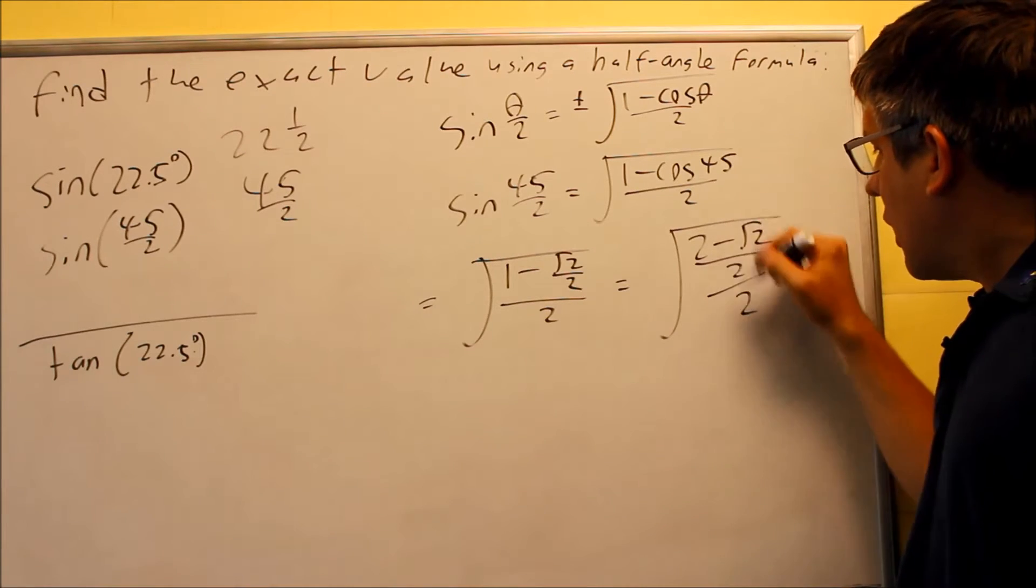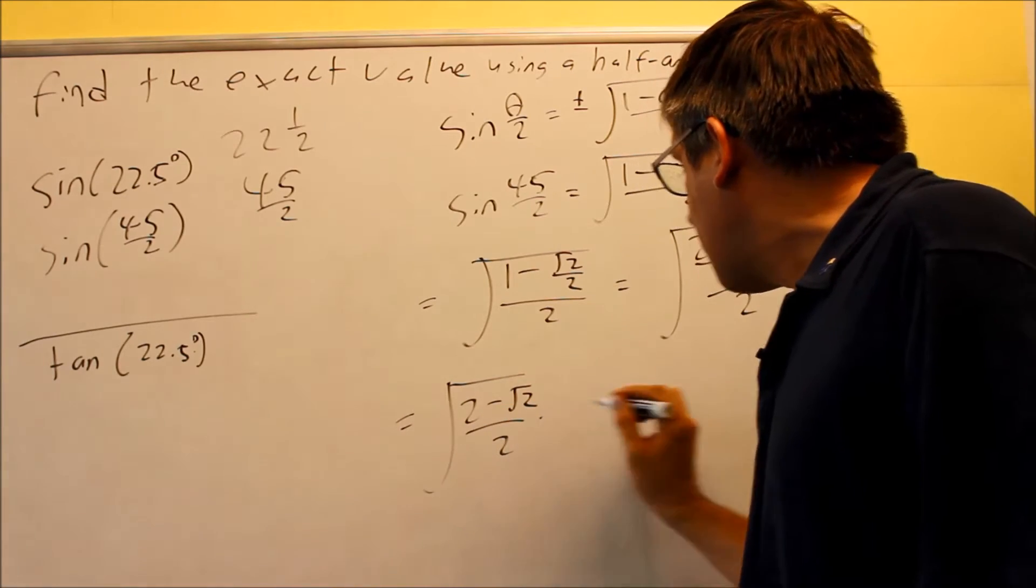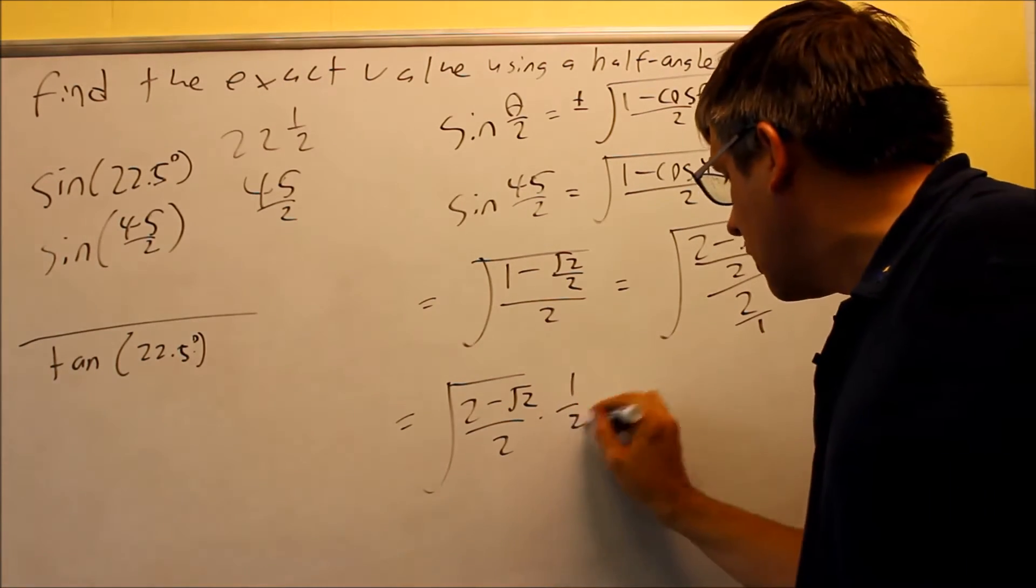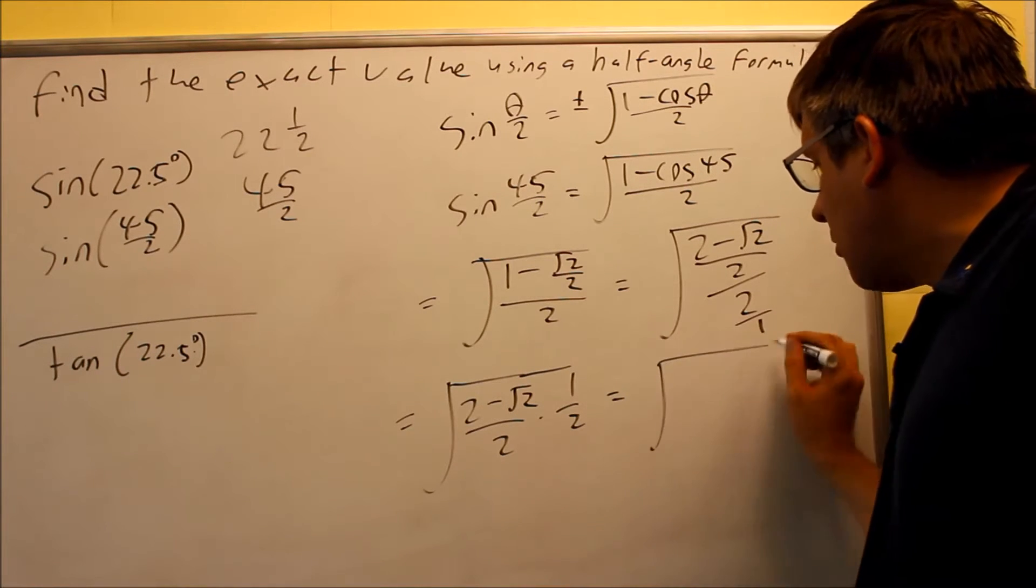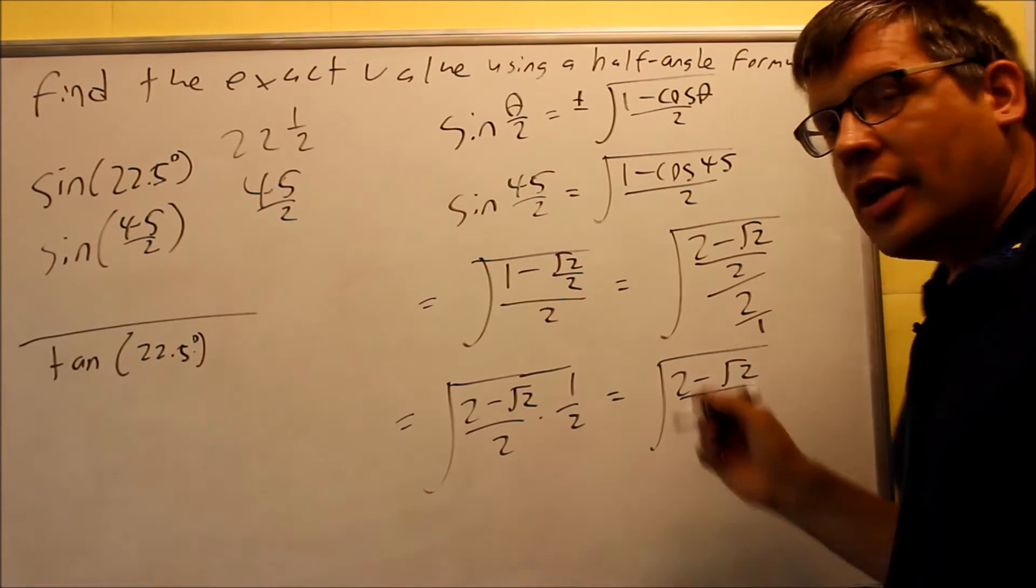I need to clean that up. So I'm going to take the top fraction and multiply by the reciprocal of the bottom one. That would be 2 over 1. So when I flip it, it's going to be 1 over 2. And so then when I multiply it more, I get 2 minus radical 2. All that's going to be over 4.